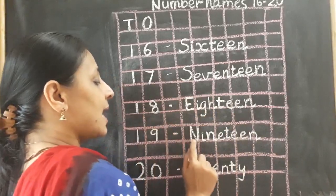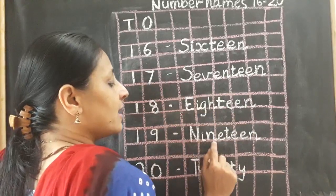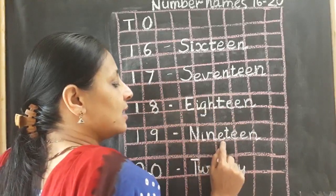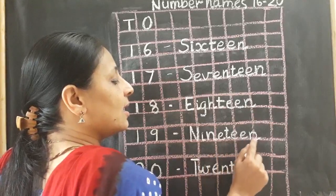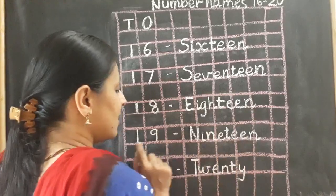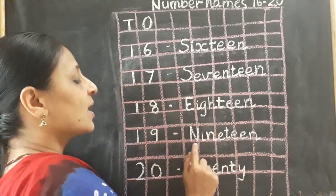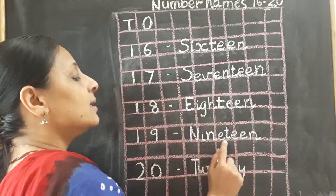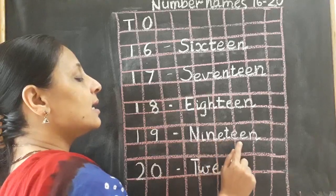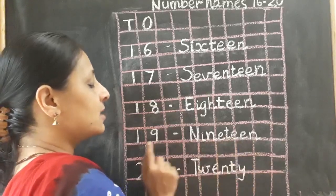Now 19. N, I, N, E, T, E, E, N. Nineteen. Once again: N, I, N, E, T, E, E, N. Nineteen.